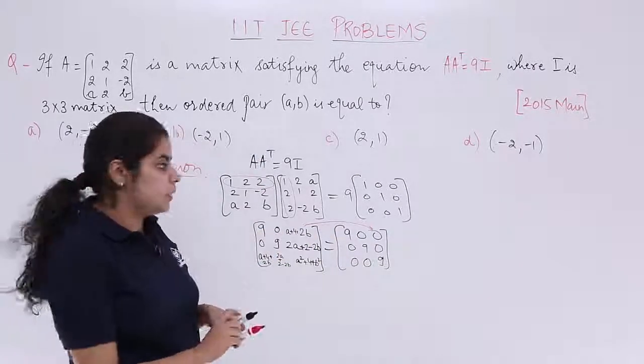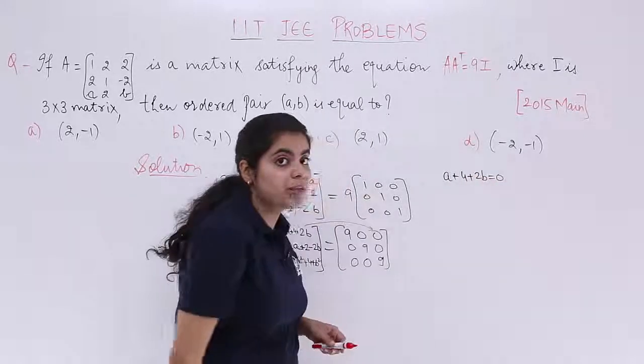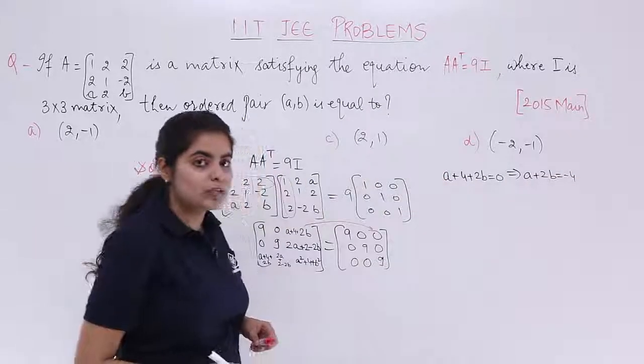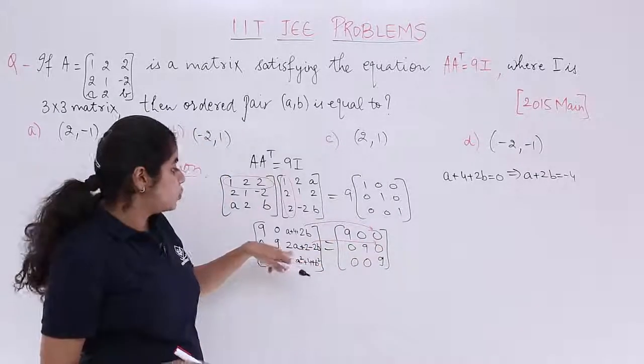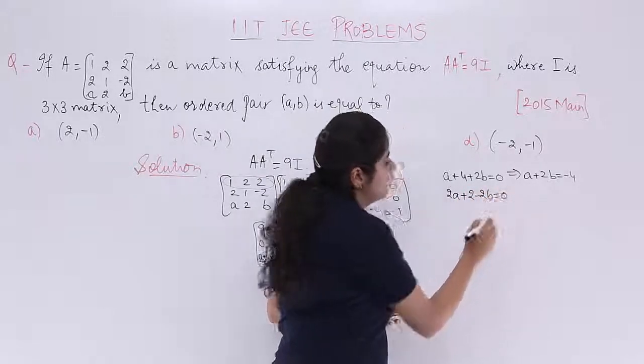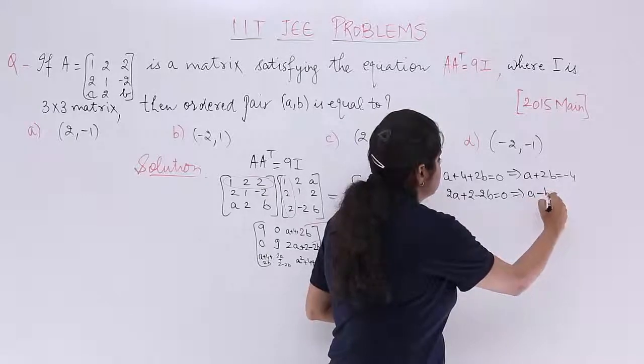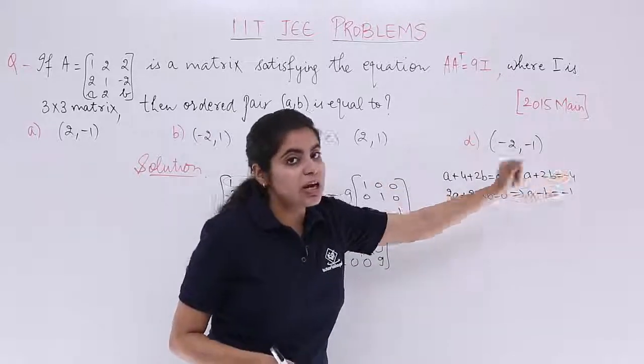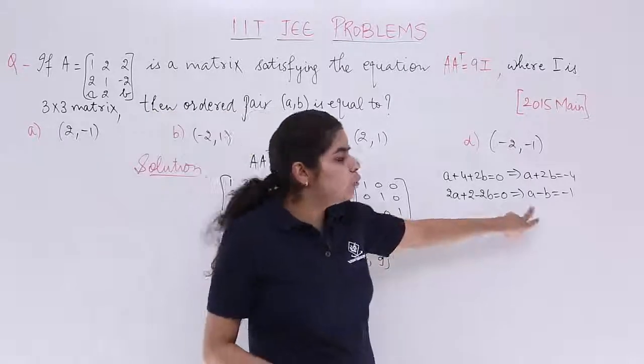See, A plus 4 plus 2B. I write it here. A plus 4 plus 2B is equal to 0. That means A plus 2B is equal to minus 4 is my one equation. Similarly, I can have something like this from here: 2A plus 2 minus 2B is equal to 0. You see here it is 0. So take 2 common. So it is A minus B is equal to minus 1. A minus B is equal to minus 1, because that 1 goes to the other side. Similarly, you can have one more equation, but what is the need? We have 2 equations, 2 unknowns. That's enough to solve.